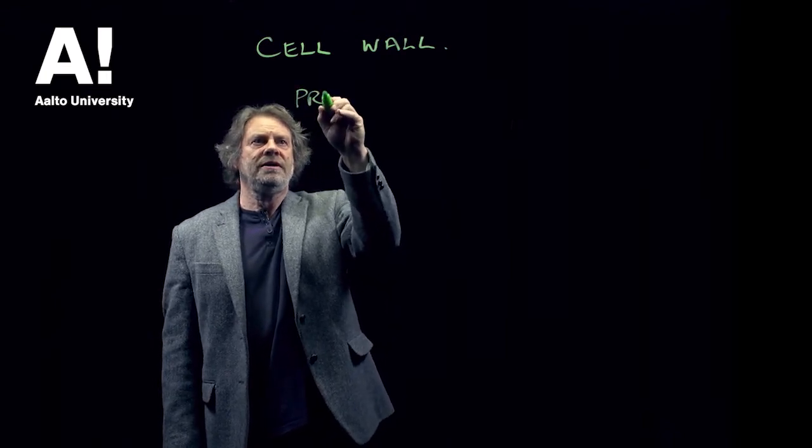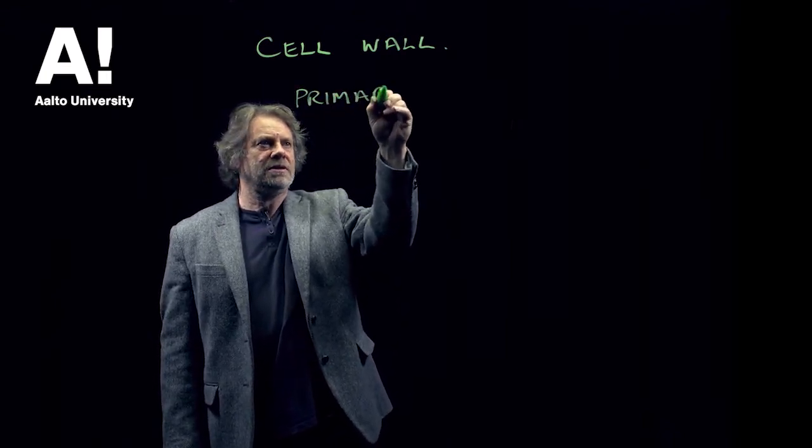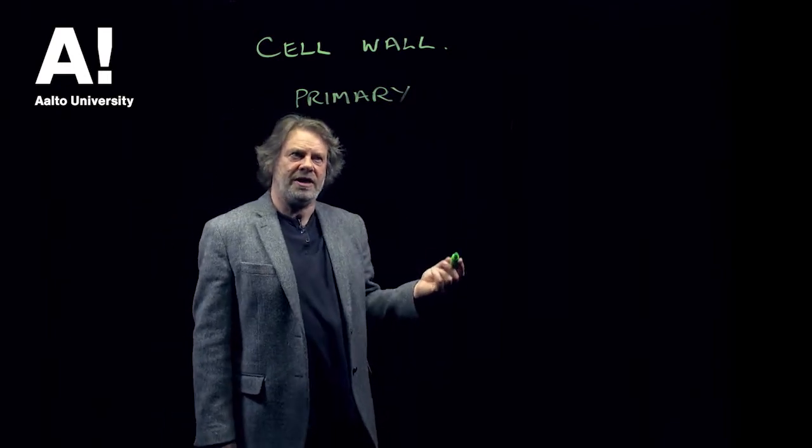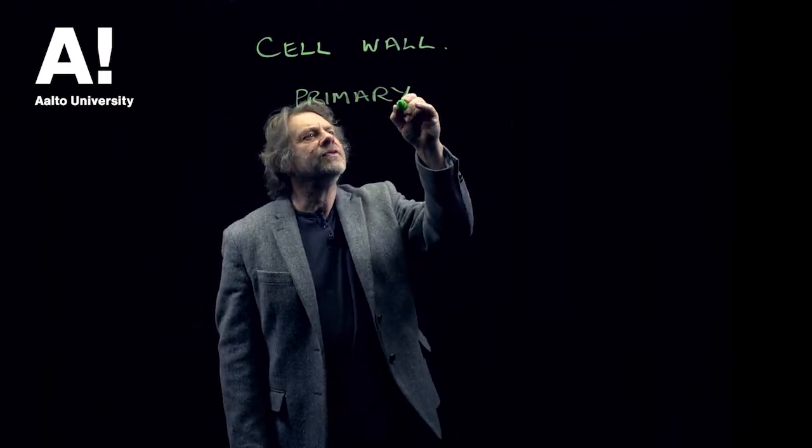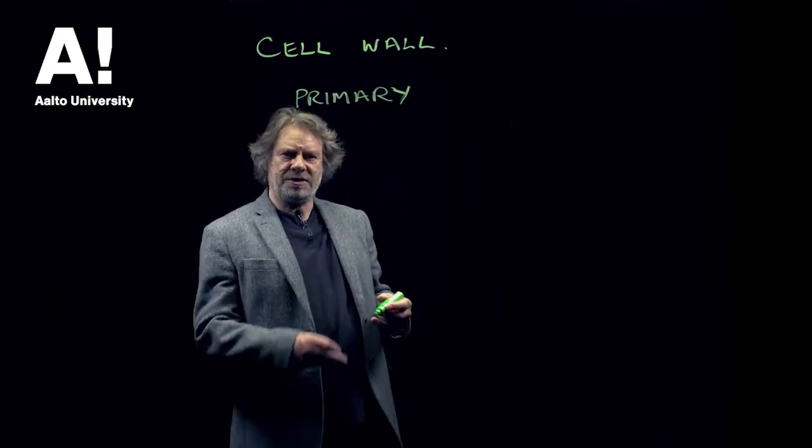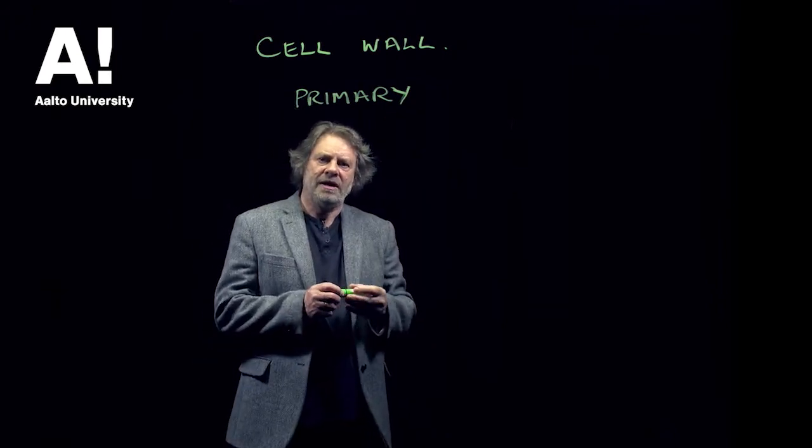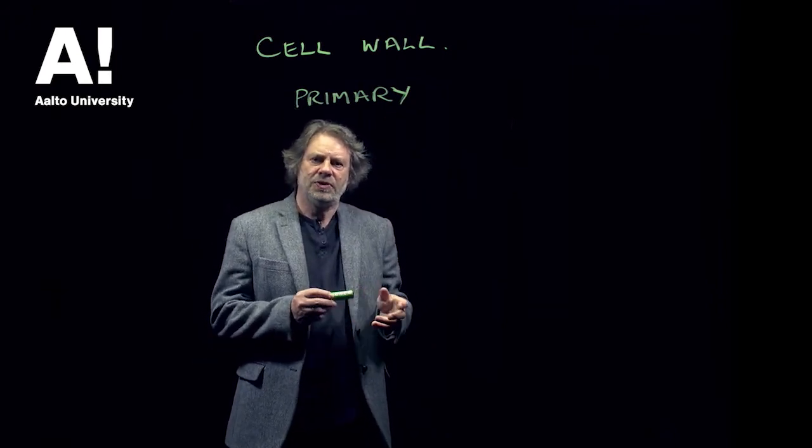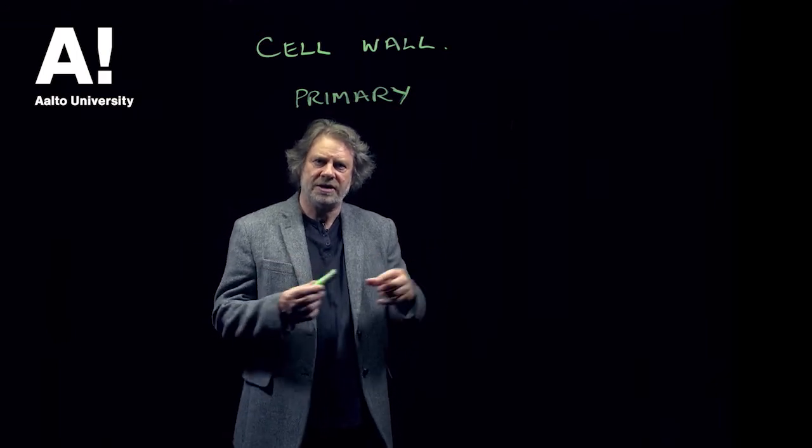Basically we have two main layers in the cell wall, the wood cell wall. We have the primary layer, which is not too surprising to hear that the primary layer is the first one that's laid down when the cell is growing in the vascular cambium in the wood tissue, so when the cells are laid the primary layer is laid down.